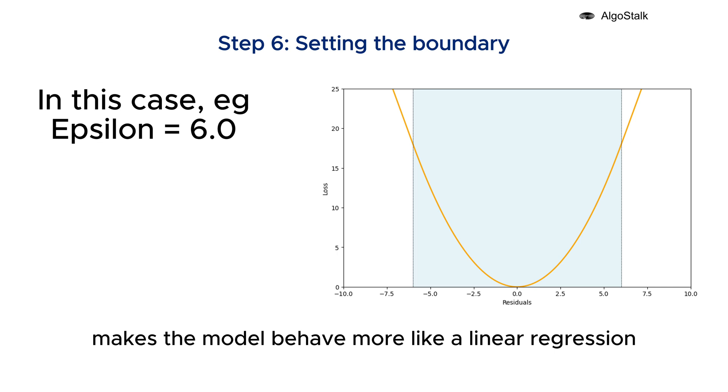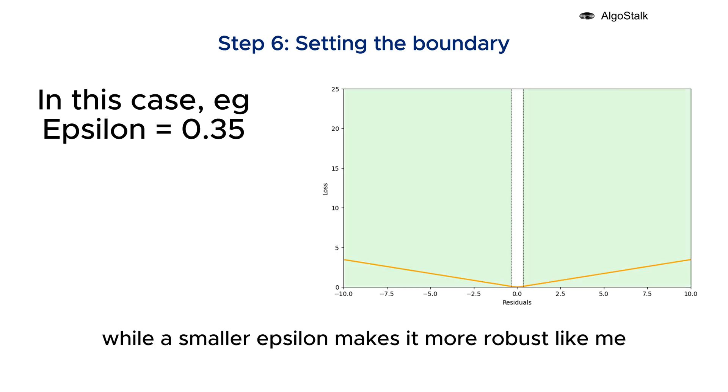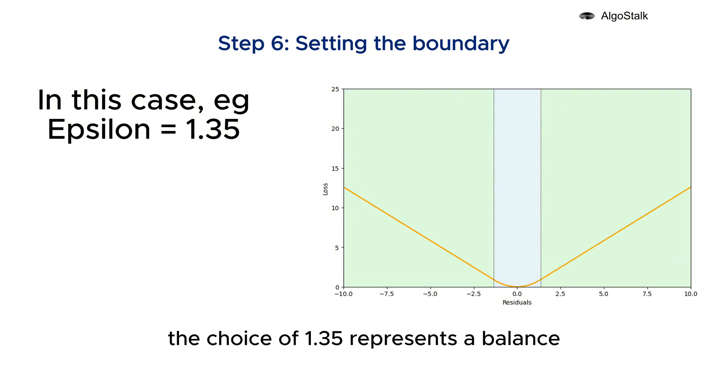The choice of 1.35 represents a balance, allowing the model to retain sensitivity to small errors while being more robust to larger errors. This value is derived from the interquartile range (IQR) rule in statistics, which often uses factors around 1.5 IQR or 1.35 for estimating the scale in a more robust manner. We can tune it, but it serves as a good starting point.